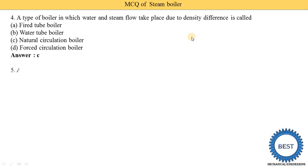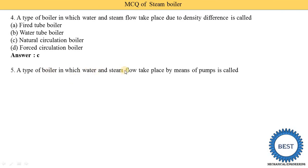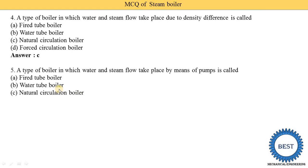A type of boiler in which water and steam flow takes place by means of a pump is called a forced circulation boiler. The difference from the previous MCQ is that here a pump is mentioned instead of density difference. So when a pump is used, it is called a forced circulation boiler. Option D is the correct answer.